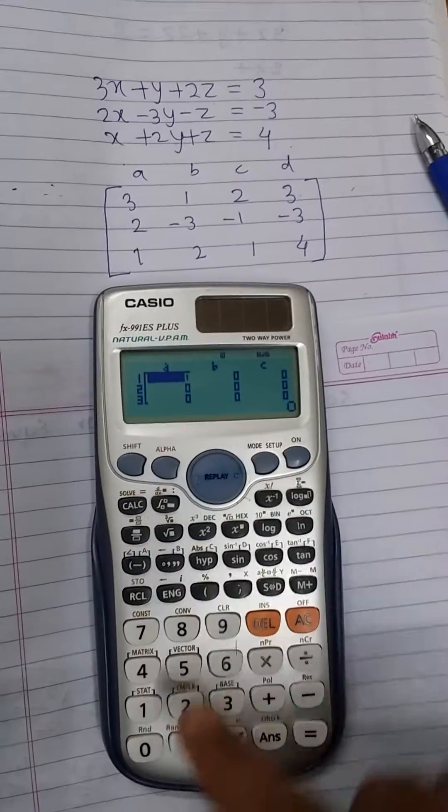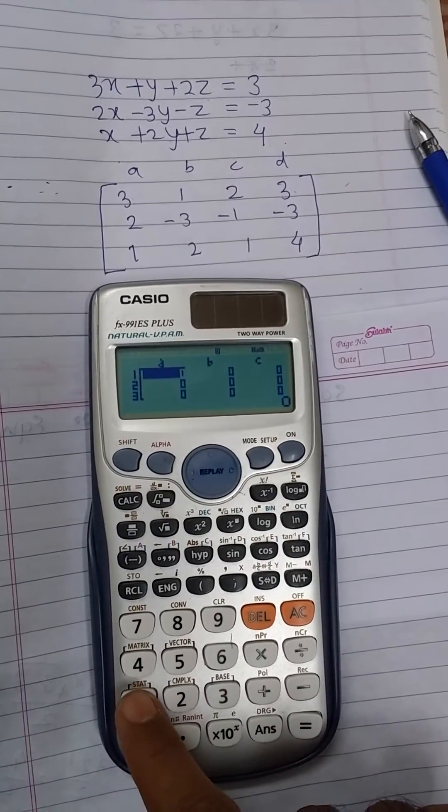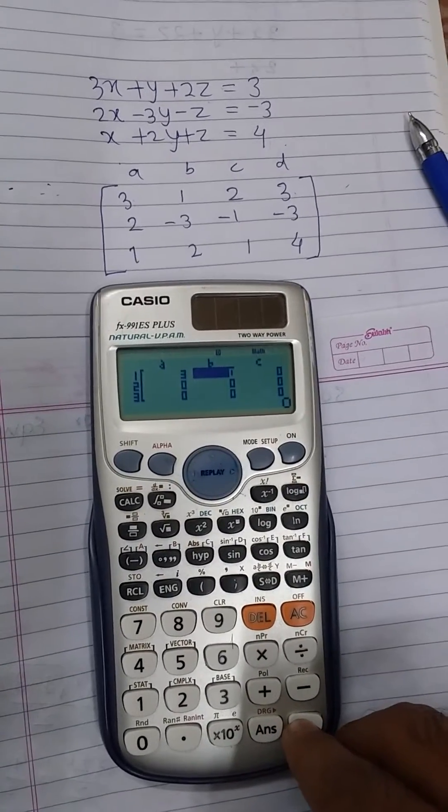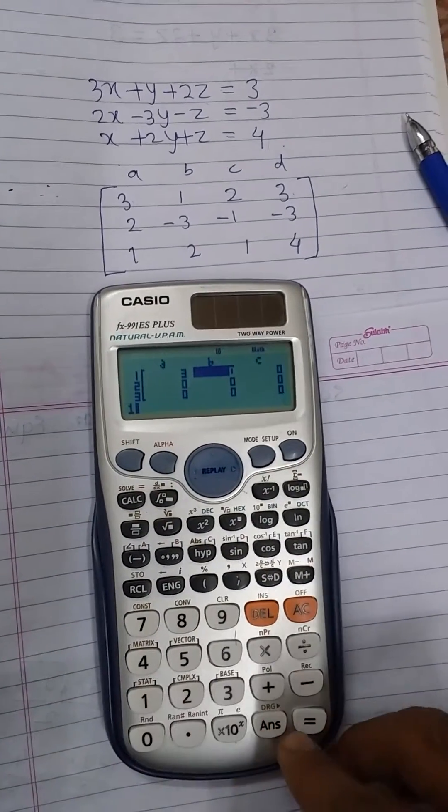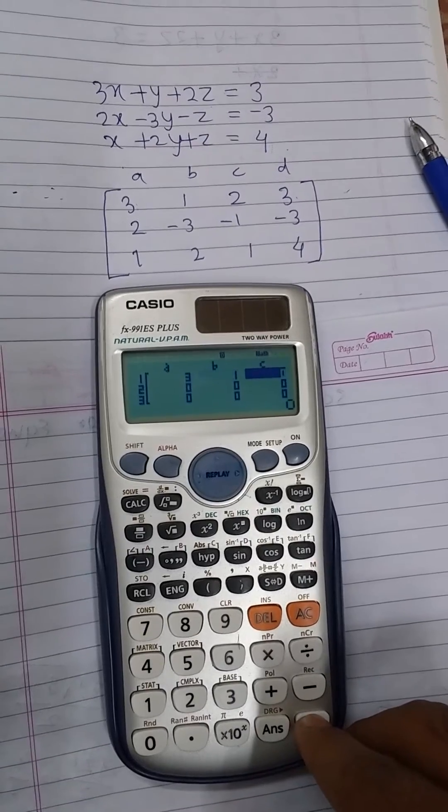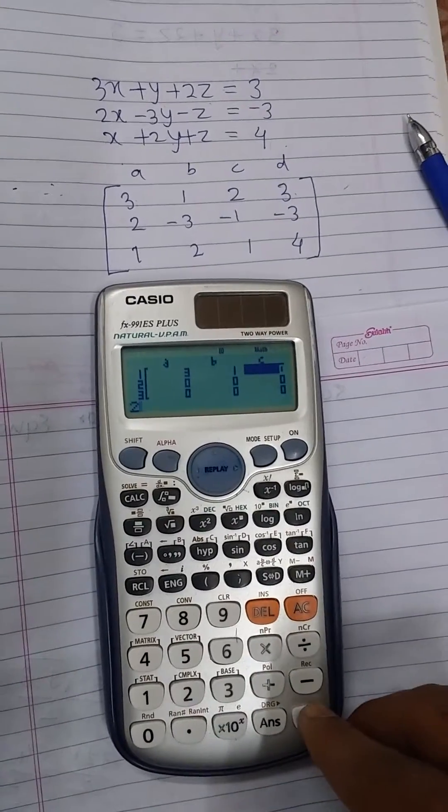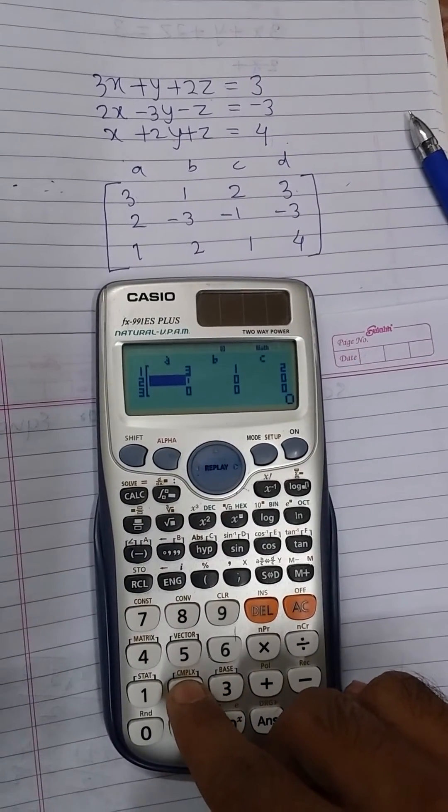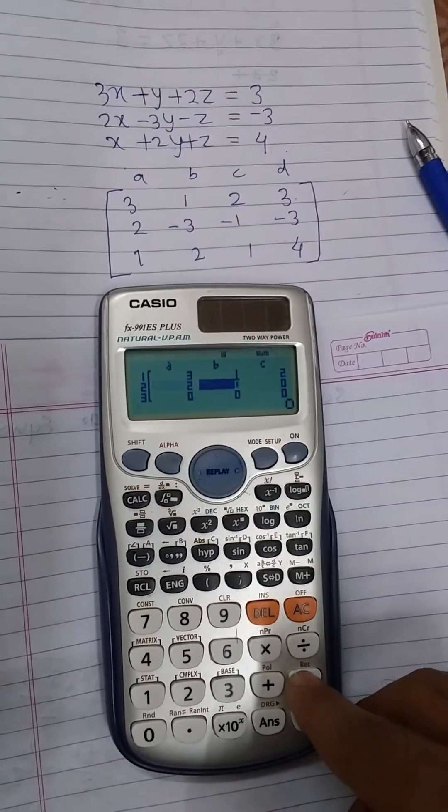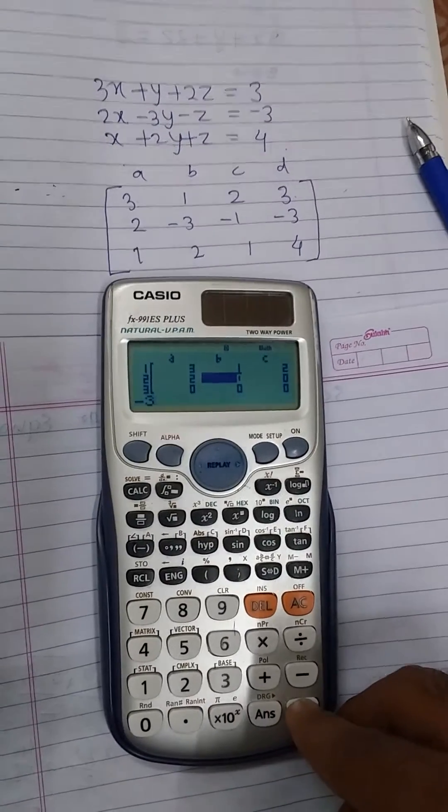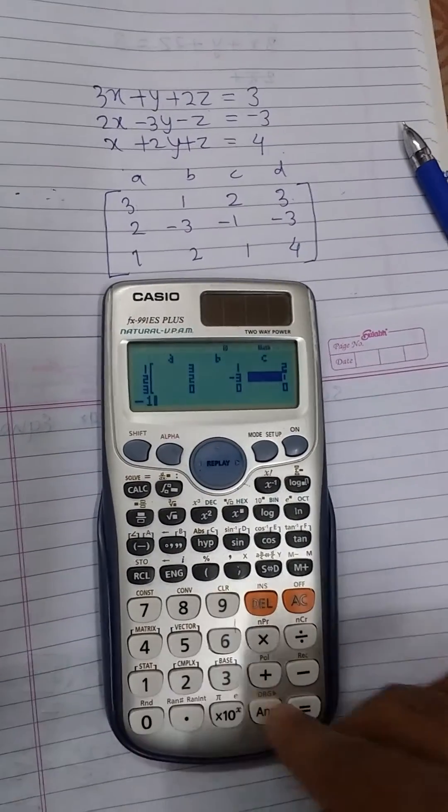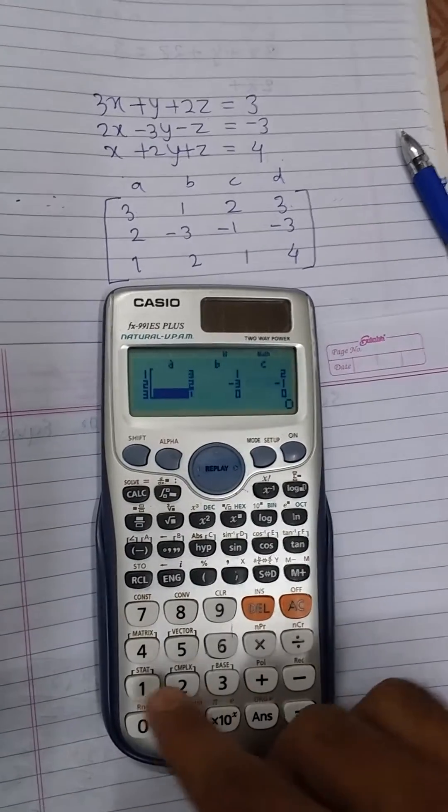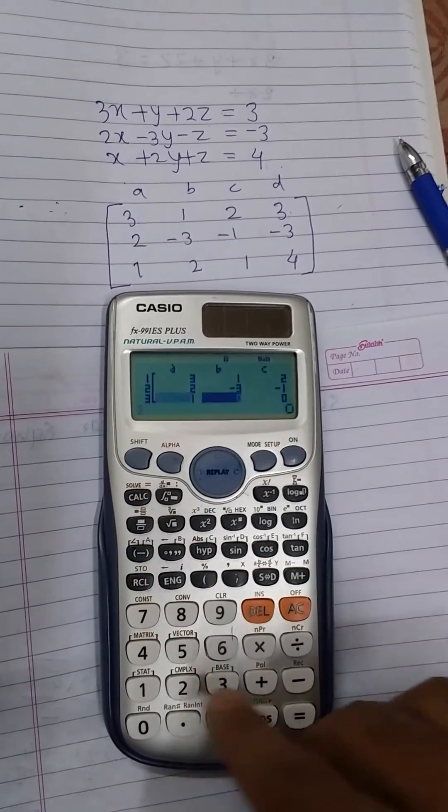Let us put all the entries. First entry 3, put 3 then press equal button. 1, press 1 then press equal button. c equals 2, press equal button. d equals 3, press equal button. Then again, 2 equals, minus 3 equal button, minus 1 equal button, minus 3 equal button, then 1 equal button, 2 equal button, 1 equal button, 4 equal button.